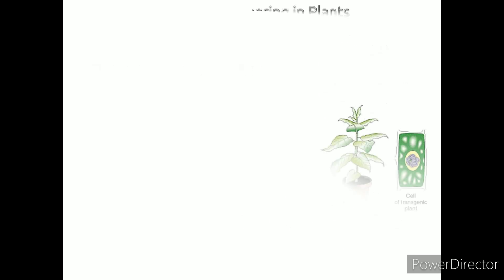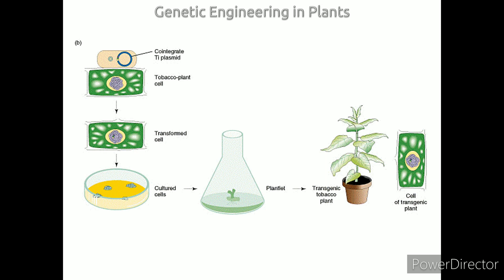Genetic Engineering in Plants: Transgenic plants are plants that carry a foreign gene. The Ti plasmid from Agrobacterium tumefaciens is used as a vector. The Ti plasmid is carried by the bacterium A. tumefaciens, which causes crown gall disease in plants due to the insertion of part of the Ti plasmid into the plant genome. Ti has been engineered so that it can deliver genes to a plant without causing disease.